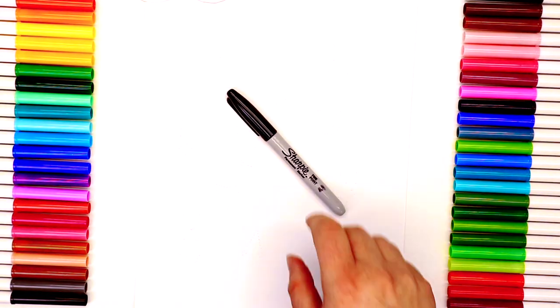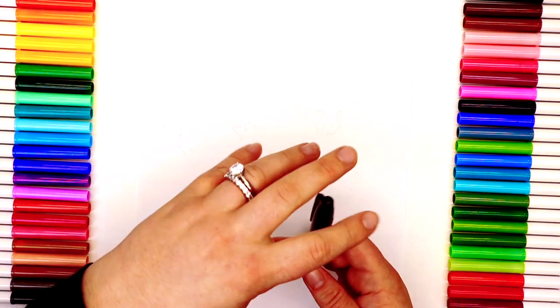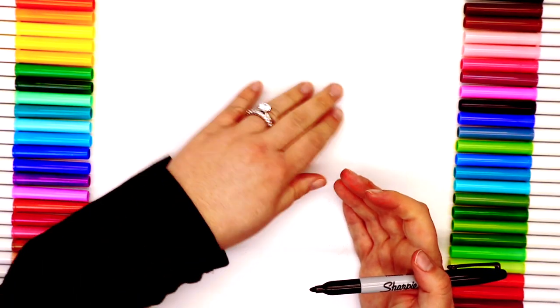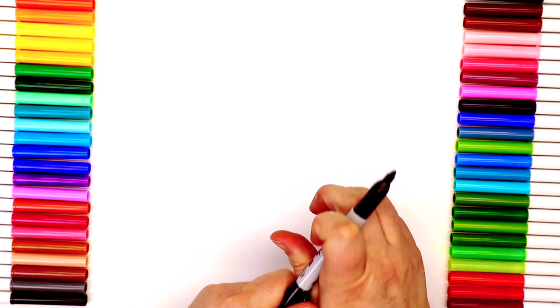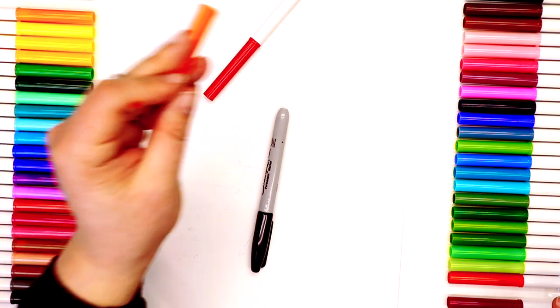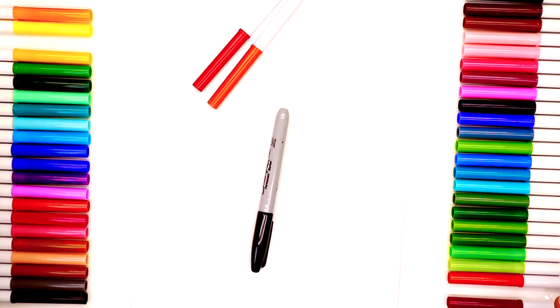So what we're going to do is we're going to draw one hedgehog together, and then I'm going to show you how to draw all the different ones, at least the faces, and then we'll add the spines to all of them. All right, so let's go ahead and get ready to start our first hedgehog, and then I'll show you the rest.